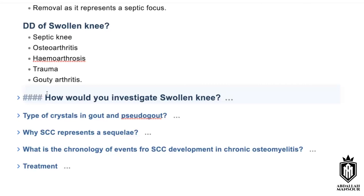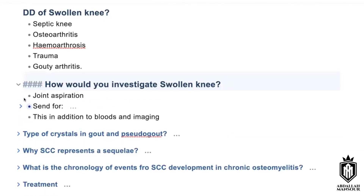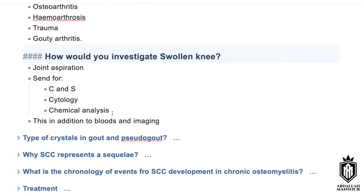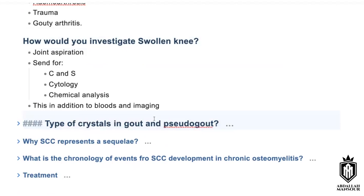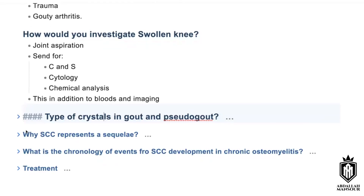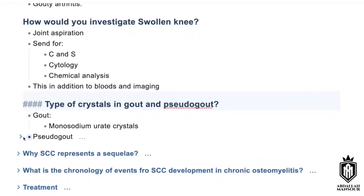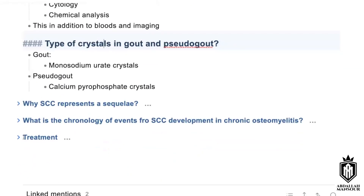You said imaging then aspiration — that's good. When you say aspiration, you'll send it for cytology and chemical analysis. What are the types of crystals in gout and pseudogout? In gout it is monosodium urate crystals, and in pseudogout it is calcium pyrophosphate crystals.